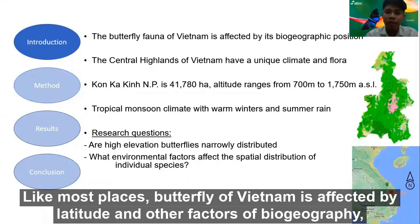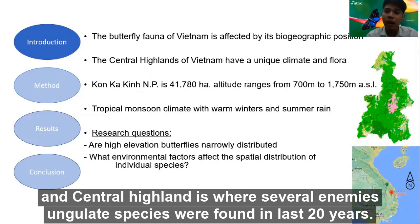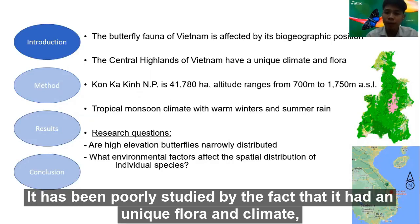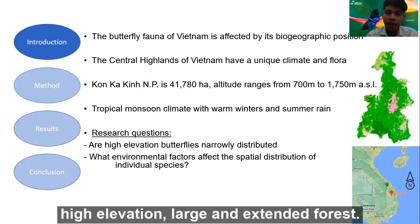Butterfly diversity in Vietnam is affected by latitude and other factors of biogeography, and the Central Highlands is where several animal species were found in the last 20 years. It has been little studied despite having a unique flora, climate, high elevation, and large intact forest.